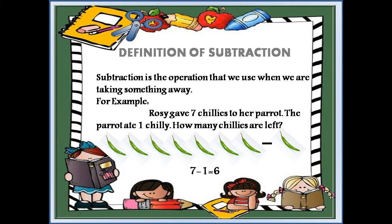Jaise ke hum bade numbers mein se chote number ko kam karke likhte hain. For example, Rosie gave seven chillies to her parrot. The parrot ate one chili. How many chillies are left? Rosie ne apne tote ko saat hari mirchen di, jis mein se tote ne ek hari mirch kha li.